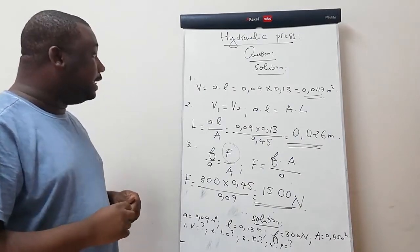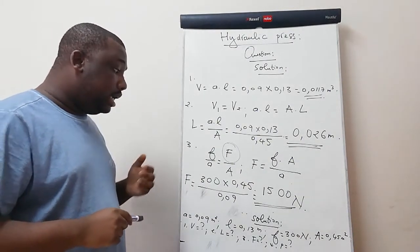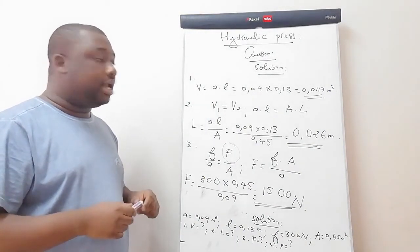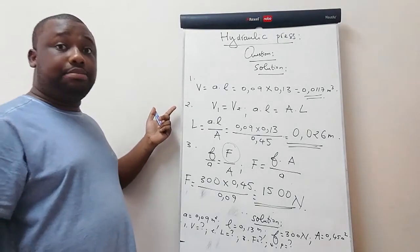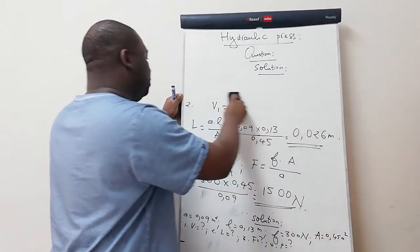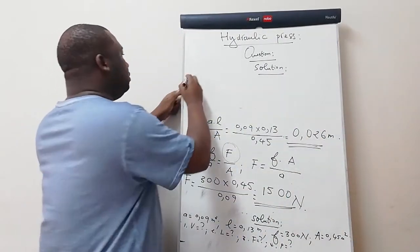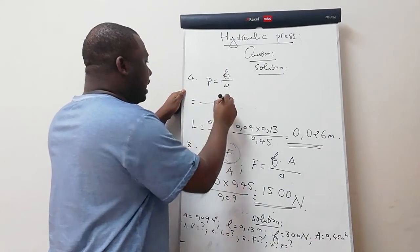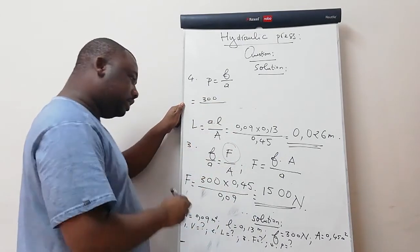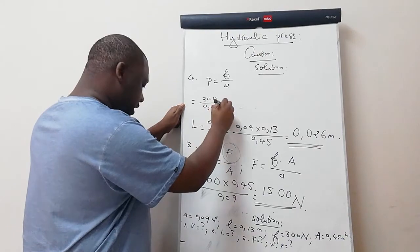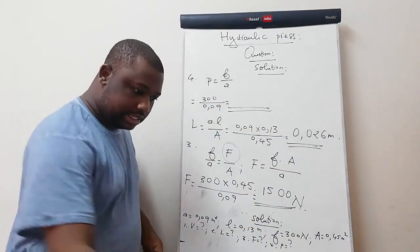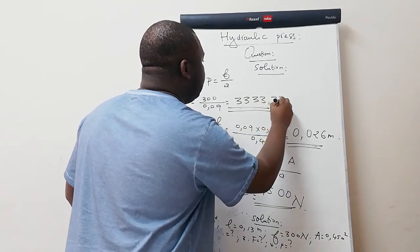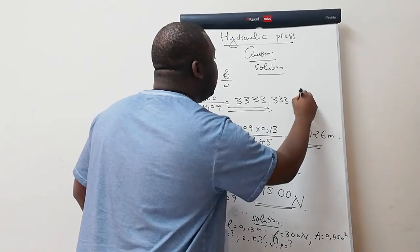Question four: find the fluid pressure. Since pressure on the ram equals pressure on the plunger, we use the plunger: P = small f / small a = 300 / 0.09. Calculating gives P = 3333.33 Pa. The standard SI unit of pressure is the pascal.